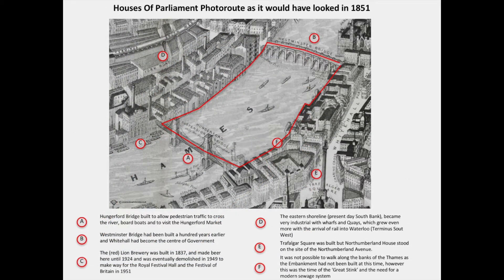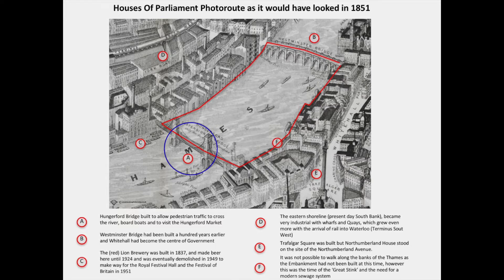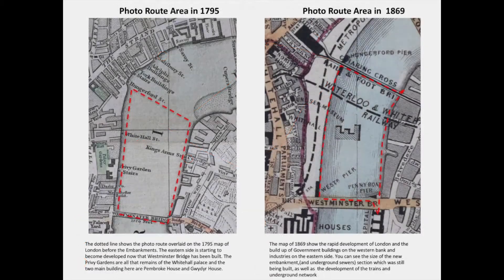Looking at the map from 1851, we can see the old Westminster Bridge and we'll be starting next to the Houses of Parliament, which had just been constructed. We'll be going along the front of old Whitehall Palace — which would have been all government buildings at that time — up until we get to Hungerford Bridge, which had just been created to link the south side of the river to the north and Hungerford Market. A couple of other maps show the difference in how things have changed over time.